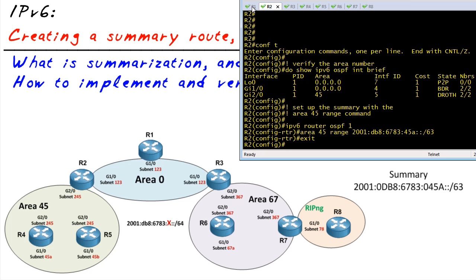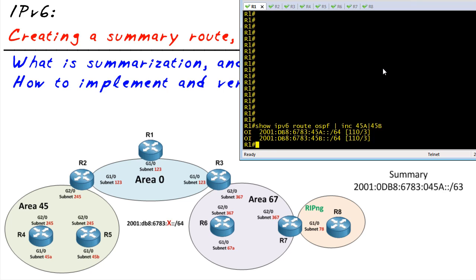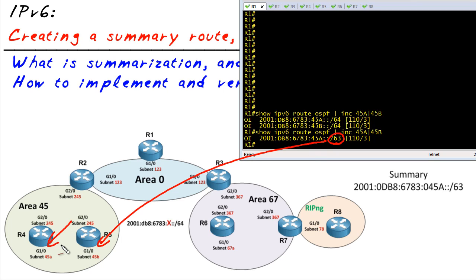If we go back to R1 and hit the up arrow, it's going to now show us, hey guess what, I have one inter-area route. It's no longer 64 bits, it's 63, but guess what, that slash 63 correctly represents both of those subnets.